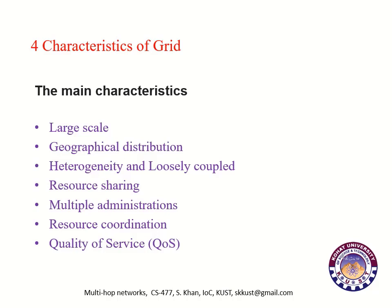Number three: heterogeneity and loosely coupled. A grid hosts both software and hardware resources that can be very varied, ranging from data files, software components or programs, to sensors, scientific instruments, display devices, personal digital organizers, computers, supercomputers, and different networks having different operating systems.